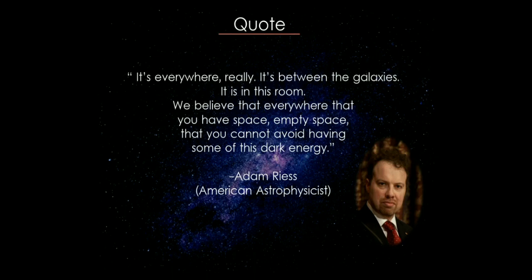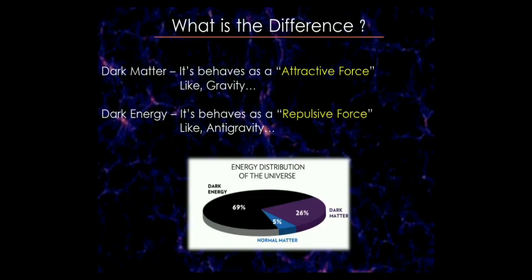First, the question is: what is the difference between dark matter and dark energy? To simplify it — dark matter behaves as an attractive force like gravity and holds up the whole universe, while dark energy behaves as a repulsive force like anti-gravity. Looking at this chart of energy distributions, normal or visible matter consists of only 5% of the entire cosmos, while dark energy and dark matter make up around 69% and 26% respectively.